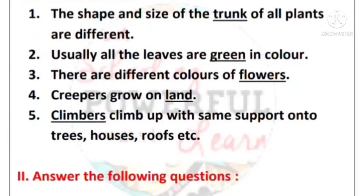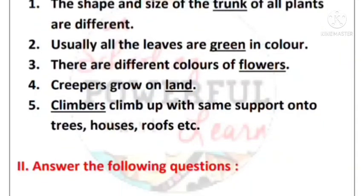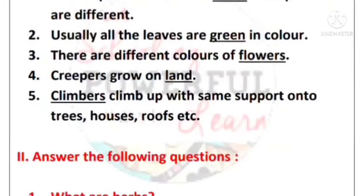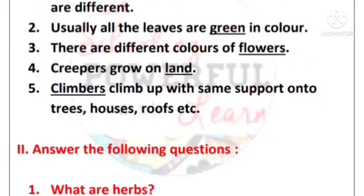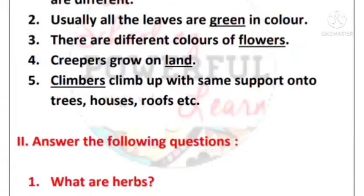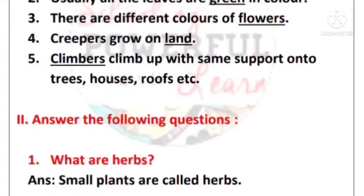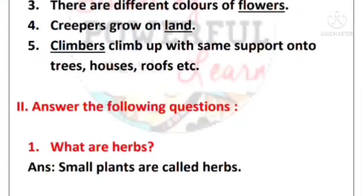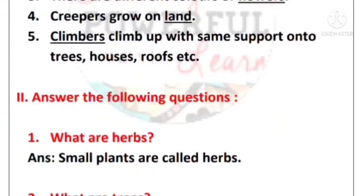Number three: There are different colors of flowers. Number four: Creepers grow on land. Number five: Climbers climb up with some support onto trees, houses, roofs, etc.